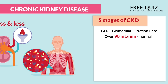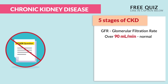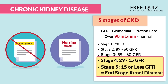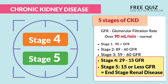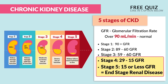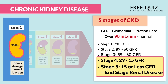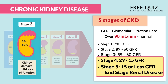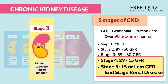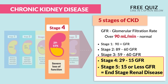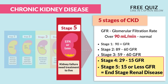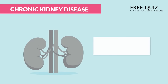The five stages are not really tested on the NCLEX, but they can be on your nursing exams, so really focus on stages four and five. Stage four has a GFR of 29 to 15, and stage five is the worst — 15 or less — which is considered end-stage renal disease. At this point the kidneys are basically failing to filter the blood with that low GFR.